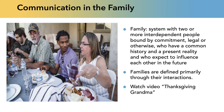With the way society has changed, the definition of family has changed. Kathleen Galvin and her colleagues have come up with the idea that a family is a system with two or more interdependent people bound by commitment — legal or otherwise — who have a common history and a present reality, and who expect to influence each other in the future. Families are defined primarily through their interactions; it's how we interact that indicates and reinforces who we are as a family.